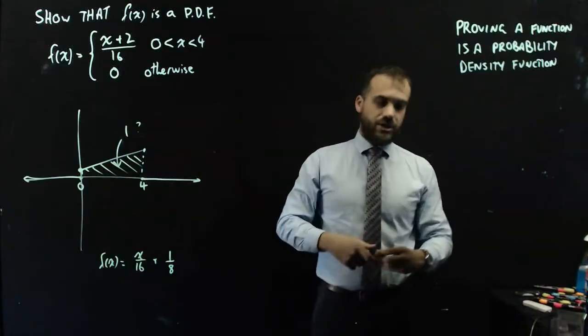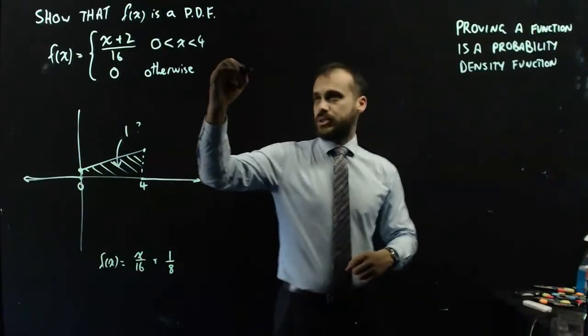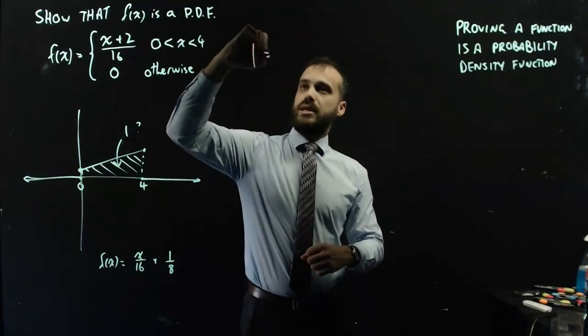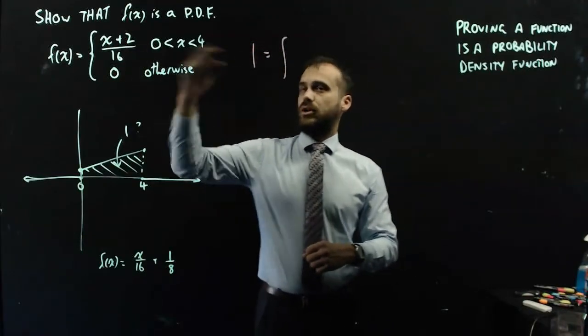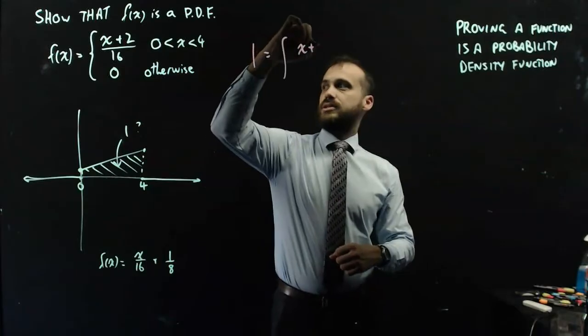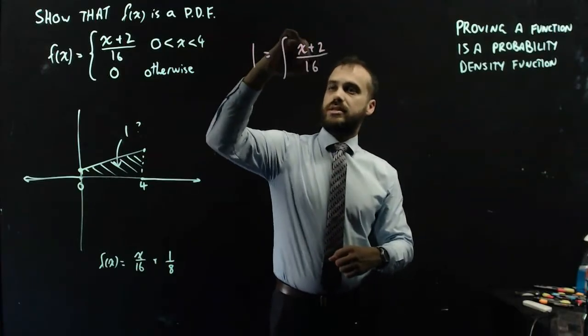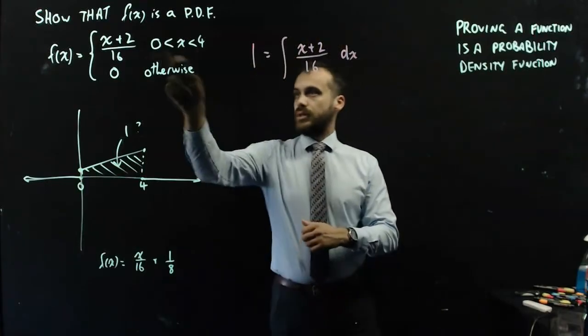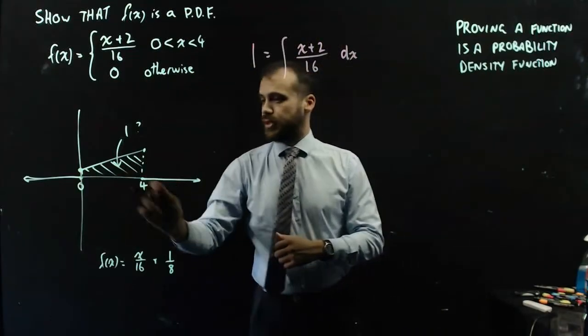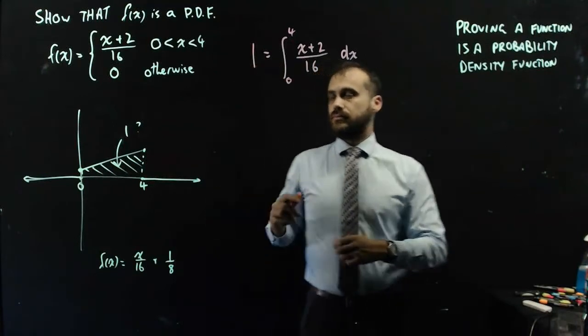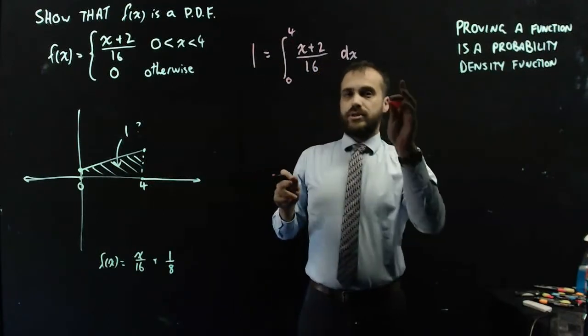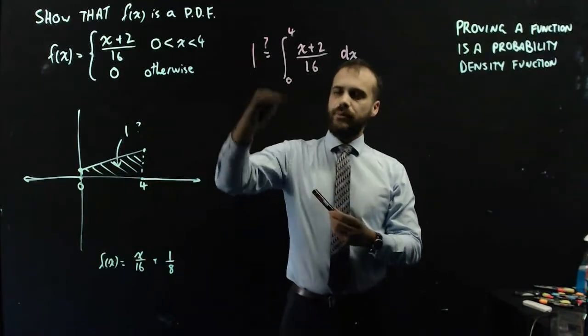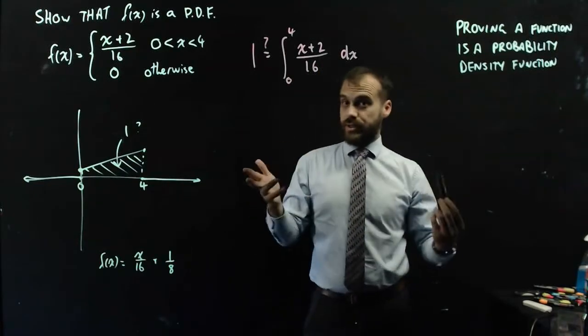Okay, so how are we going to do this integration again? So I'm just going to switch colors here, and I'm going to say that we know that 1 will be equal to the integral of x plus 2 on 16, with respect to x, between our two values. Okay, so we're saying that 1 will be equal to this, or at least we hope it will be. So now we just need to show that it is.